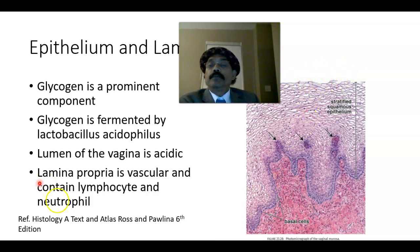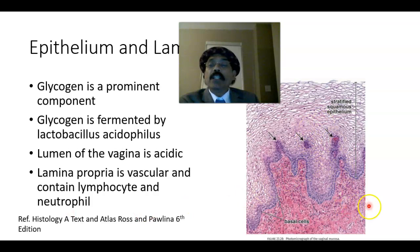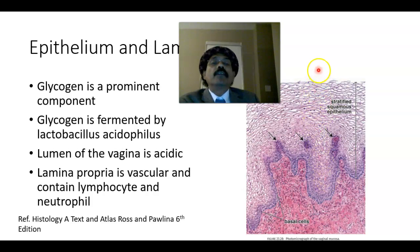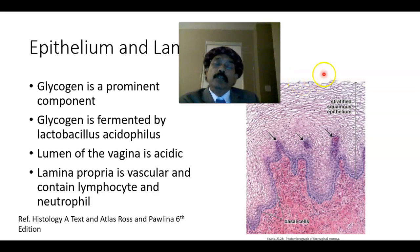The acidic environment in the lumen is essential to prevent bacterial infection inside the vagina. We also have lymphocytes and neutrophils present in the lamina propria, which may also migrate among the epithelial cells and pass out into the lumen.